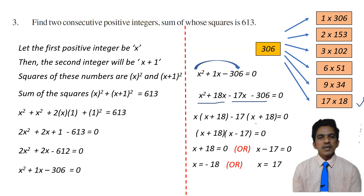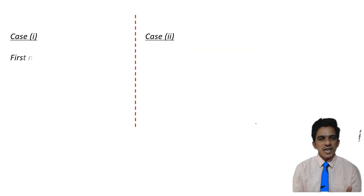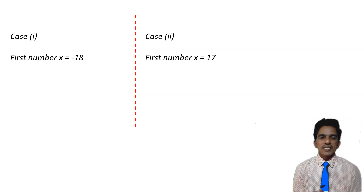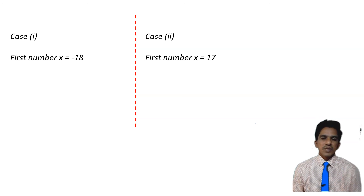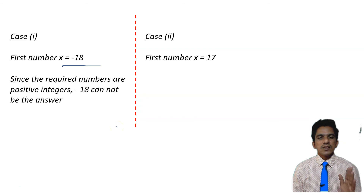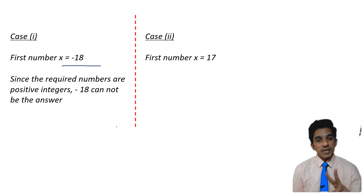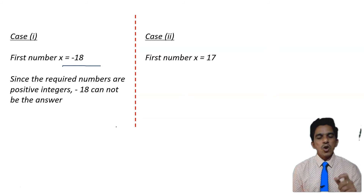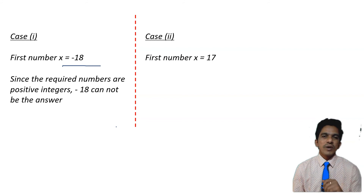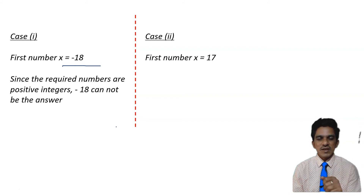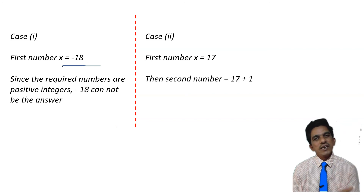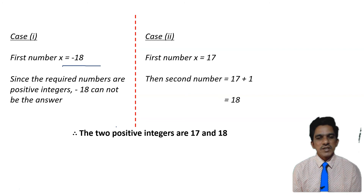Now extending the solution to case 1 and case 2: in case 1, the first number is minus 18, and in case 2, x equals 17. Since we need to find two positive integers, minus 18 cannot be the answer and we ignore that case. In case 2, the first number is 17 and the second number is x plus 1, which is 18. Therefore the two consecutive positive integers are 17 and 18.